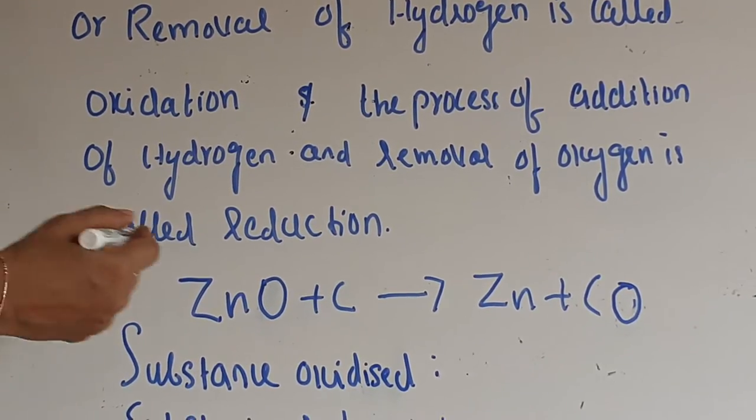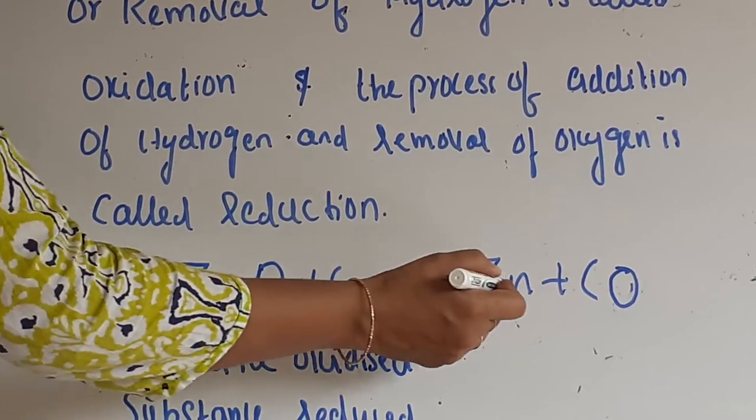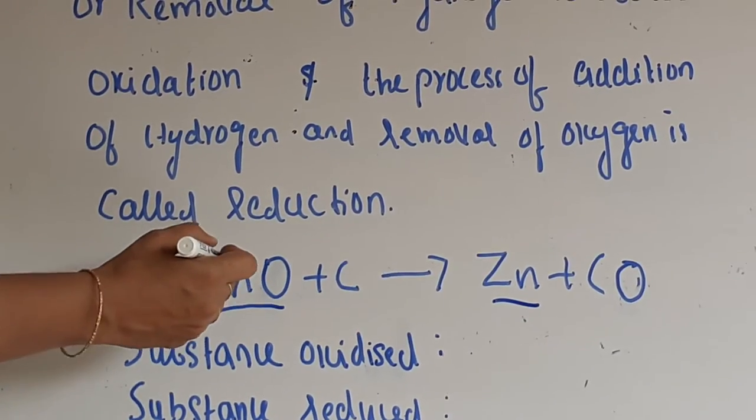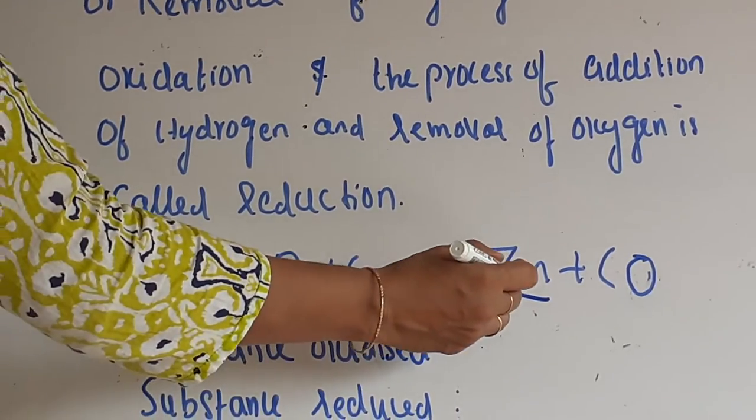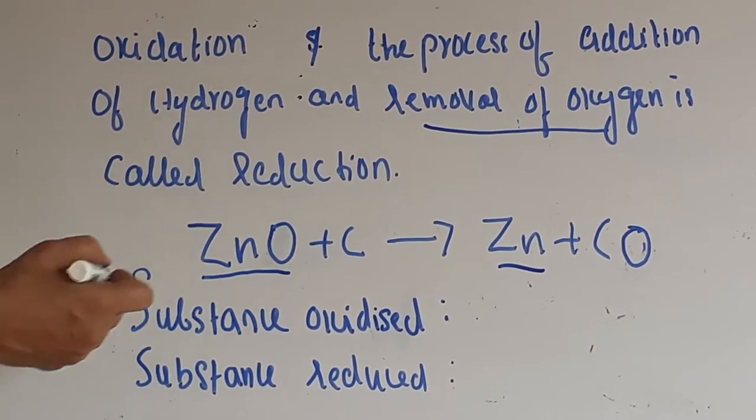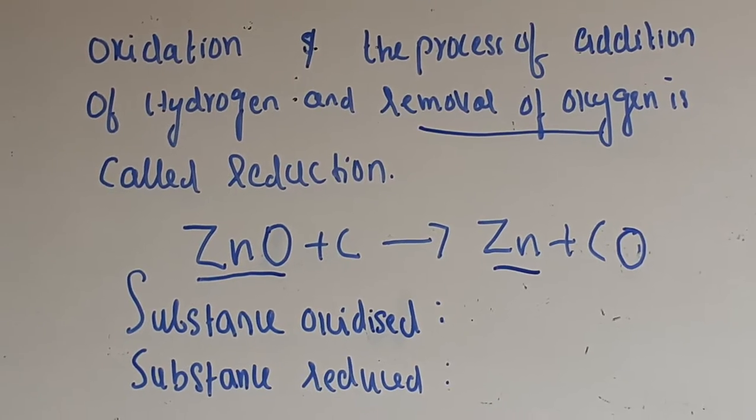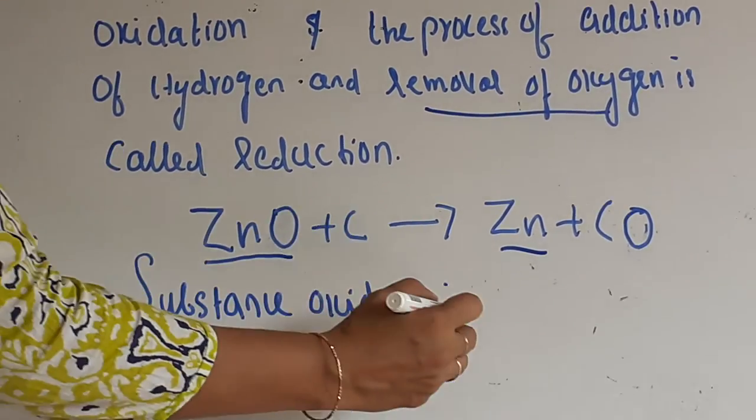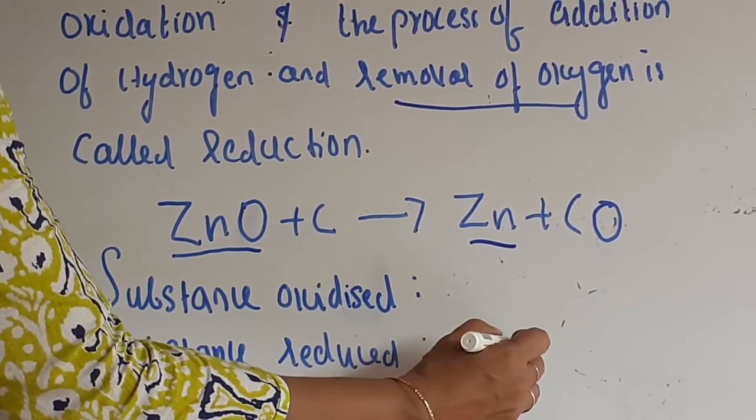Here you can see zinc oxide changing to zinc. So here oxygen is being removed. Removal of oxygen is called reduction. So zinc oxide is undergoing reduction. The substance reduced will be zinc oxide.